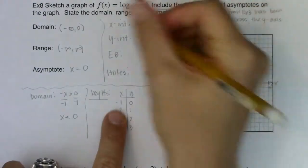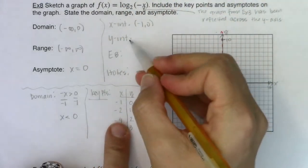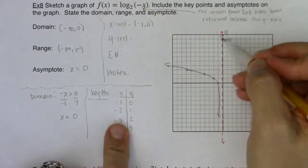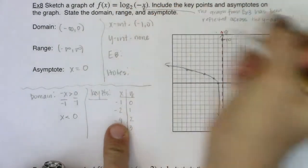All right. So for my x intercept, I found it. It was here at negative one, zero. For my y intercept, again, I still, I can't plug in x equaling zero. X equaling zero is a vertical asymptote. So I don't have a y intercept.